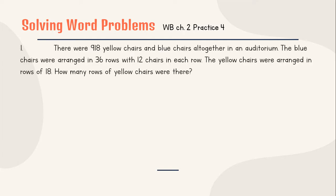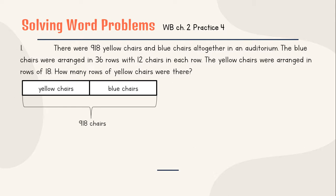Number 1. There were 918 yellow chairs and blue chairs altogether in auditorium. So it means that yellow chair plus blue equals 918. The blue chairs were arranged in 36 rows with 12 chairs in each row. The yellow chairs were arranged in rows of 18. So the blue will be arranged in 36 rows and each row will be filled with 12 chairs. And then the yellow chairs were arranged in rows of 18. So we do not know how many rows for the yellow chairs, but we know that each row of yellow chairs is 18. How many rows of yellow chairs were there? So take a look at this one.